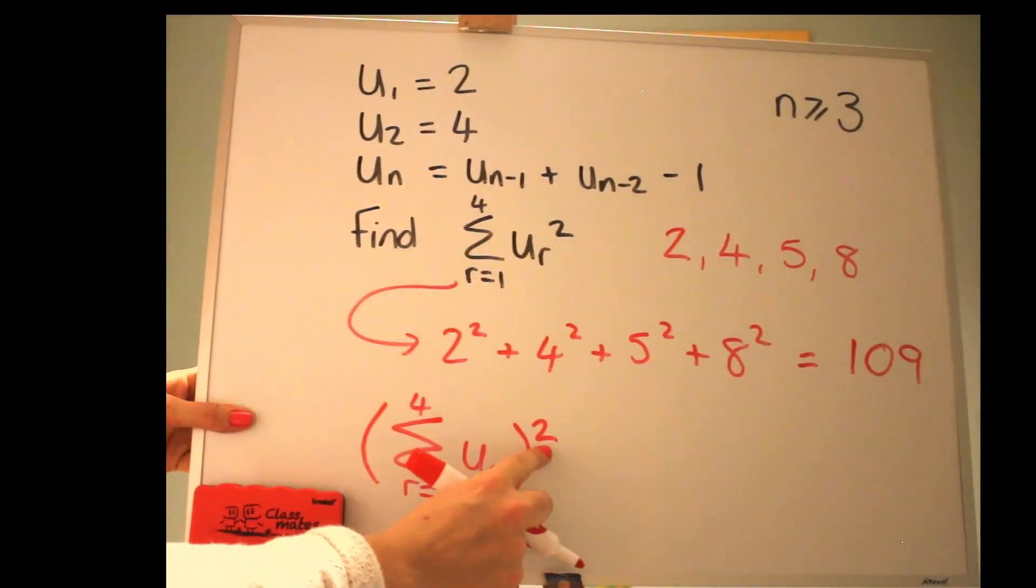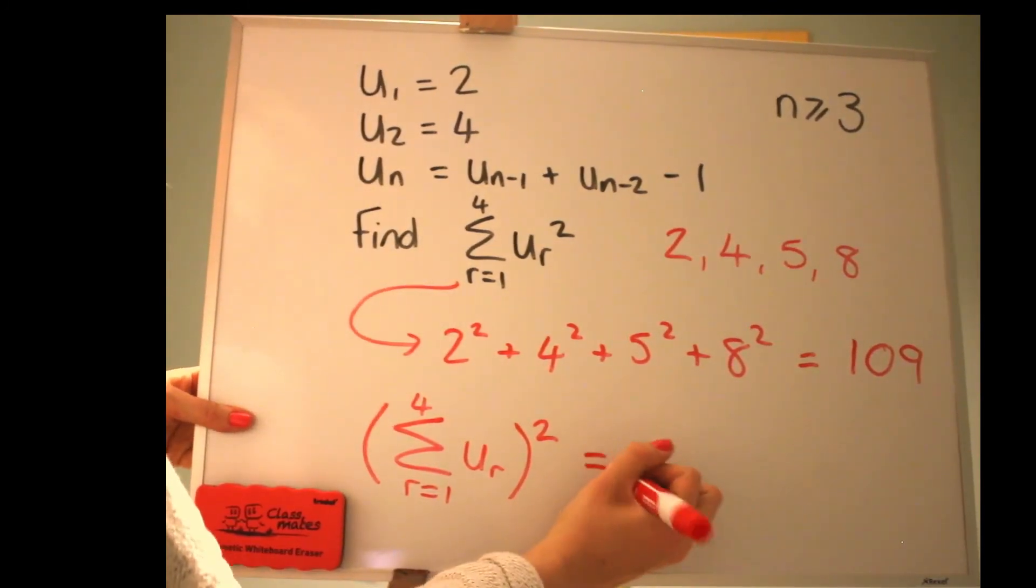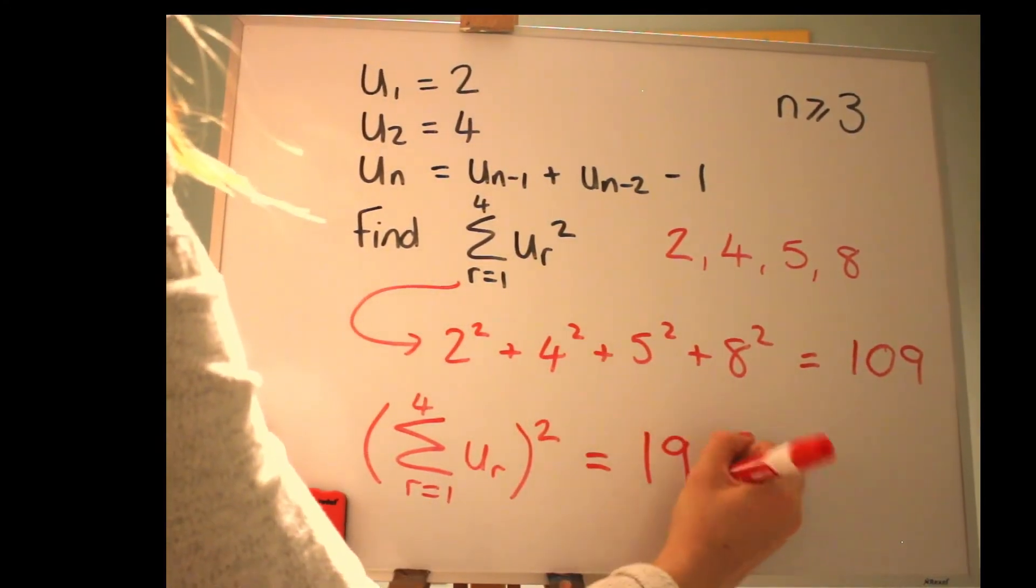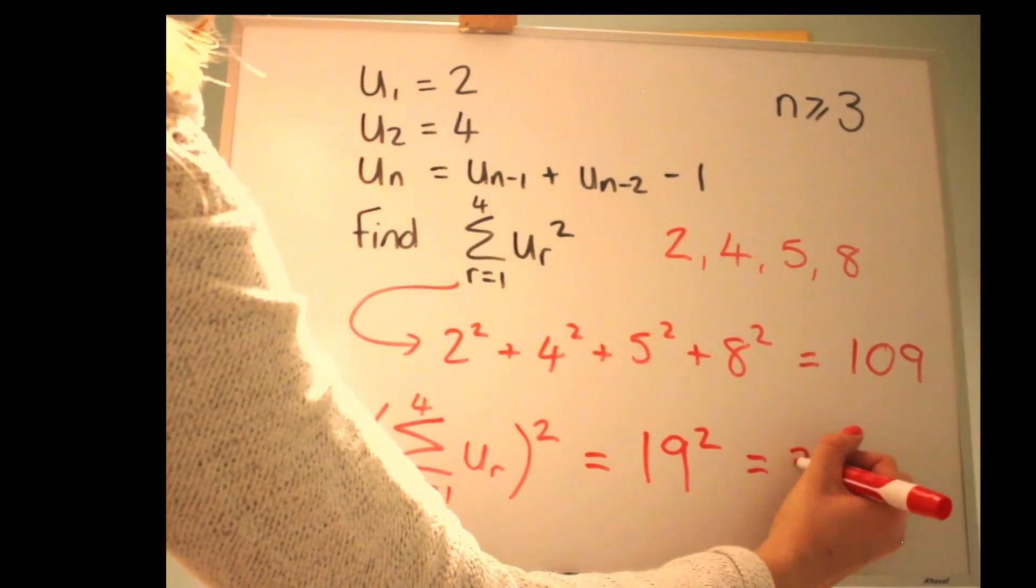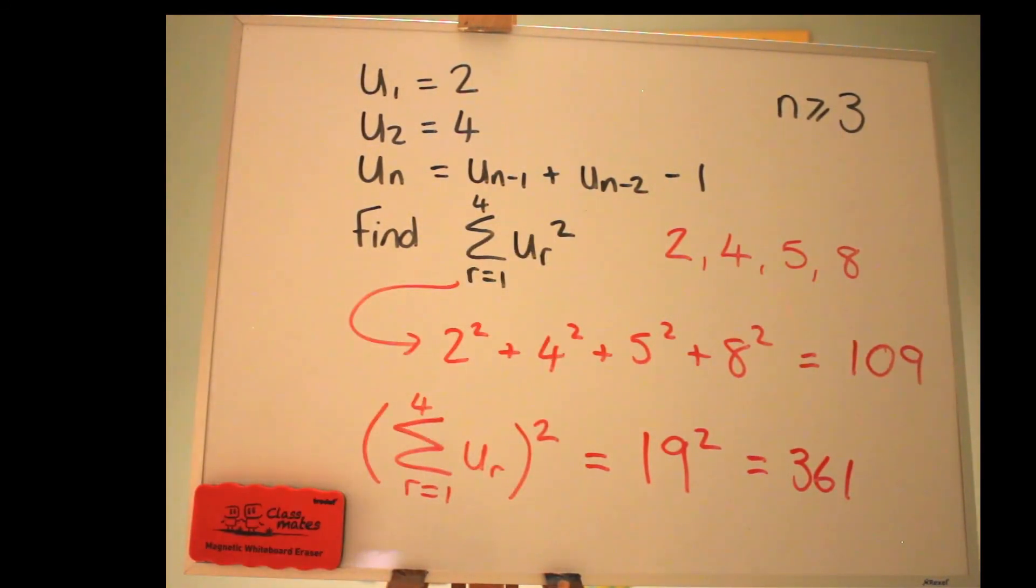And just to clarify, that is different from if you were doing this. So just where you put the squared makes a big difference. Because this means to add them all up and then square it afterwards. So that would be adding these up, which gets you 19, and then squaring that answer, 361. So just be careful about where the squared happens. Well I hope that was helpful and gave you a flavour for some different things you can do with recurrence relations. Keep practising different questions and have fun. Thank you so much for watching.